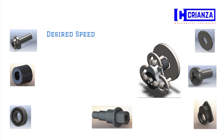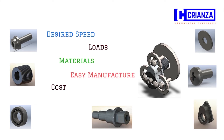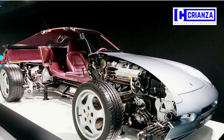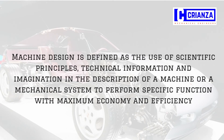During designing, various calculations are performed considering desired speed, loads, material, ease of manufacturing, costing, and specific dimensions, so that the product can be manufactured at minimum cost and deliver optimum desired performance. In a similar fashion, all the components of the car including the engine have to be designed so that they optimally meet all the functional requirements at the lowest possible cost. This whole process of designing is called machine design or mechanical design.